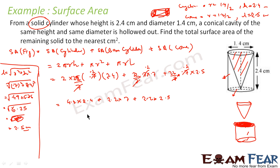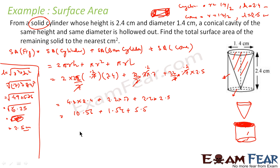Solving: 4.4 × 2.4 = 10.56, plus 2.2 × 0.7 = 1.54, plus 2.2 × 2.5 = 5.5. Adding these gives 17.6 centimeters squared. Since we are talking about surface area in centimeters, this becomes 17.6 cm². Hope you understood what we have done.